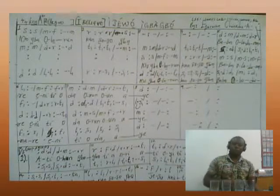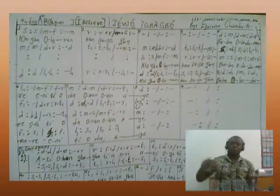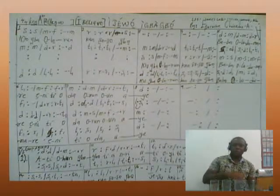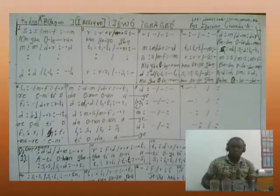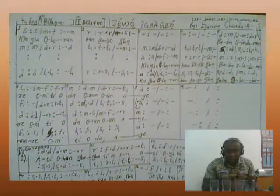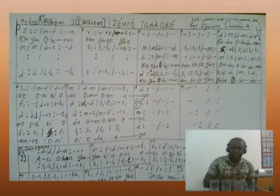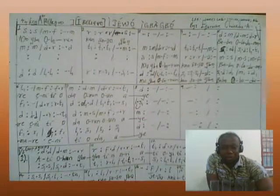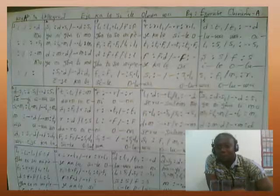Now let's look at this one in Yoruba language. One, two, three, four — so, so, me, fa, me. Take your time, go to it again. All right, and the last example there.